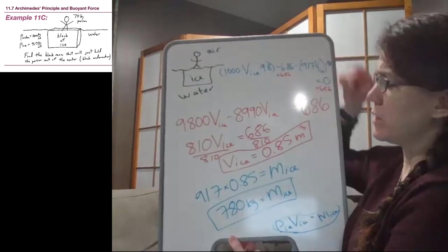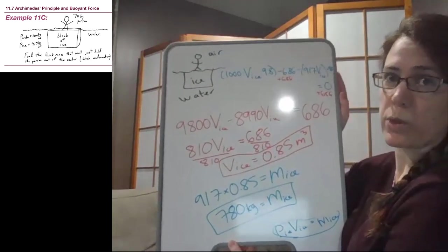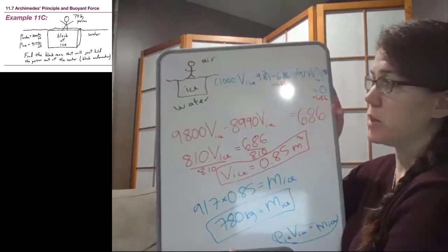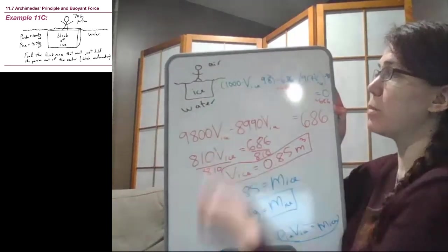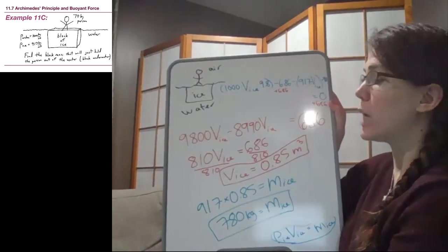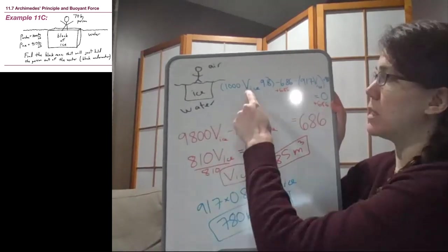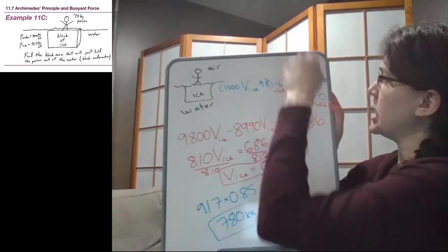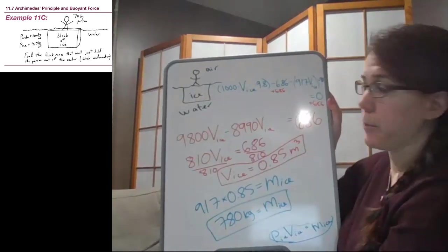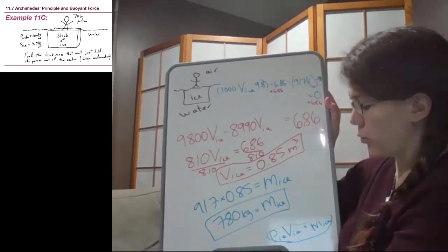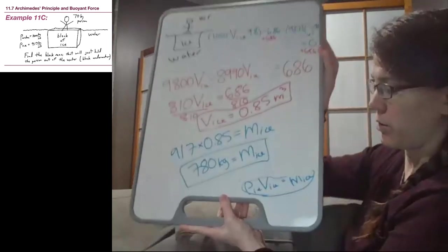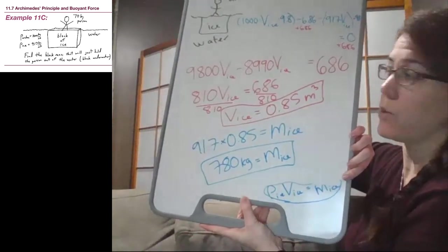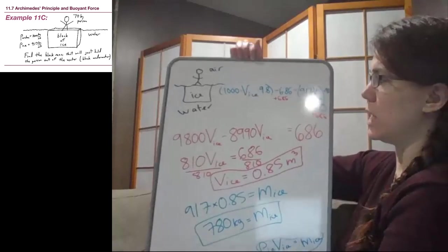So this problem, we had to cycle through this board, so you can always rewind to see the earlier steps. This problem had the same flow of the previous one. We drew a picture and we drew a free body diagram. We wrote out all of the forces added up together, which ended up being the buoyant force up, the weight of the person down, the weight of the ice down, and that equaled 0.